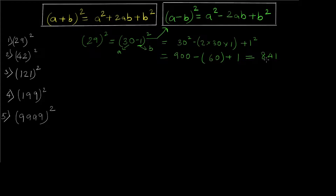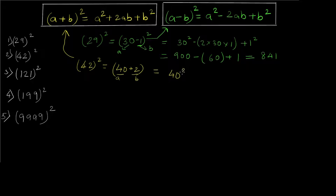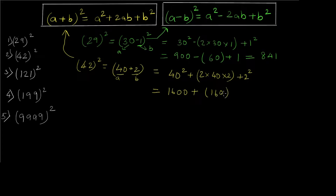This technique is definitely faster than the conventional method. For question number 2, we have to find the square of 42. Now 42 can be represented as 40 plus 2, so we apply the (a+b)² formula with a=40 and b=2. That gives us 40² + 2×40×2 + 2² = 1600 + 160 + 4 = 1764.